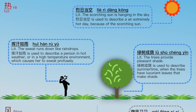Idioms that describe very hot weather. 形容炎热天气的成语。 烈日当空 — The scorching sun is hanging in the sky. 烈日当空 is used to describe an extremely hot day because of the scorching sun. 灰汗如雨 — The sweat runs down like raindrops. 灰汗如雨 is used to describe a person in hot weather or in a high temperature environment, which causes him or her to sweat profusely. 绿树成荫 — The trees provide pleasant shade. 绿树成荫 is used to describe summer time when the trees have luxuriant leaves that make shade.